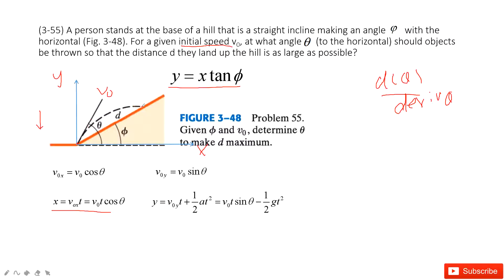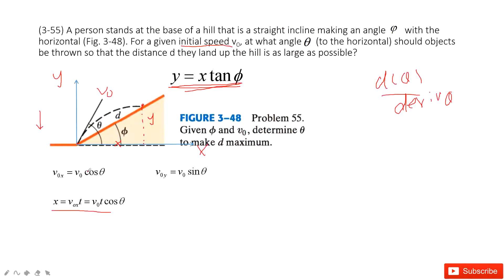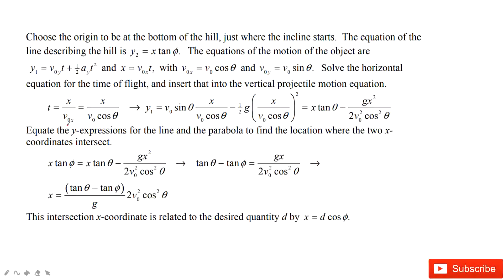When the object lands at a point, this x and y must also satisfy the hill equation y equals x tangent phi. So we can solve the problems this way. From the x equation, we can solve for t: t equals x divided by v0x.